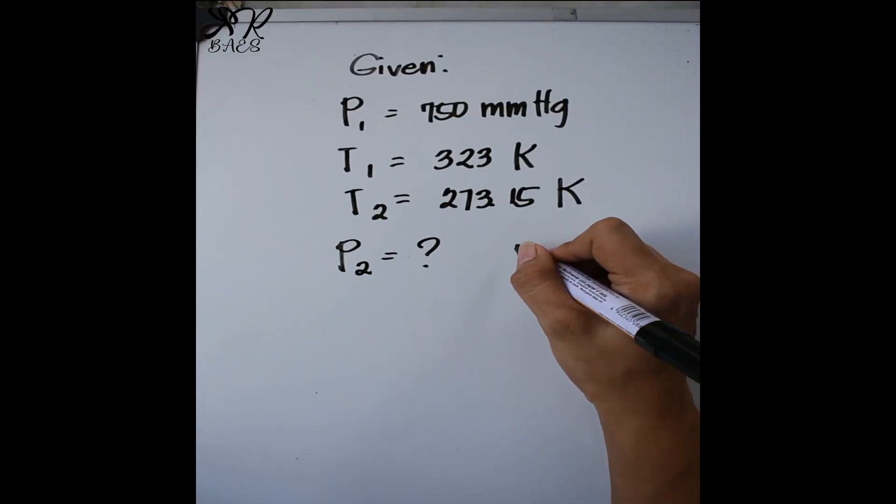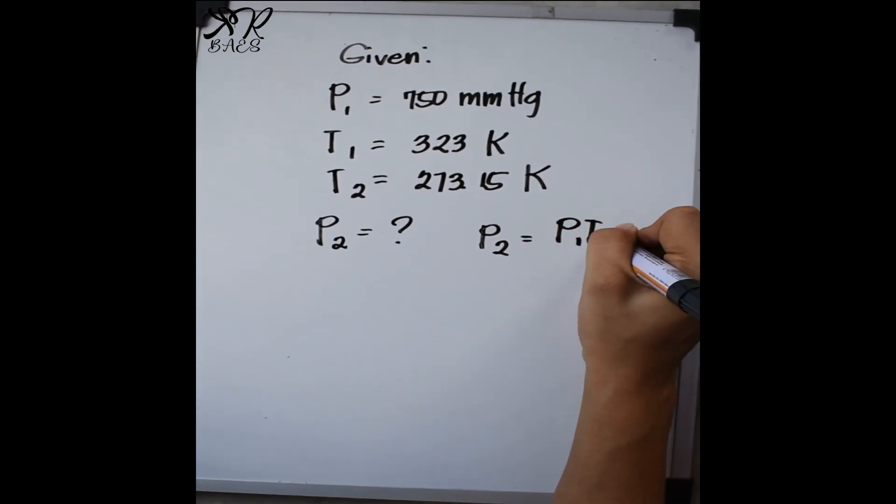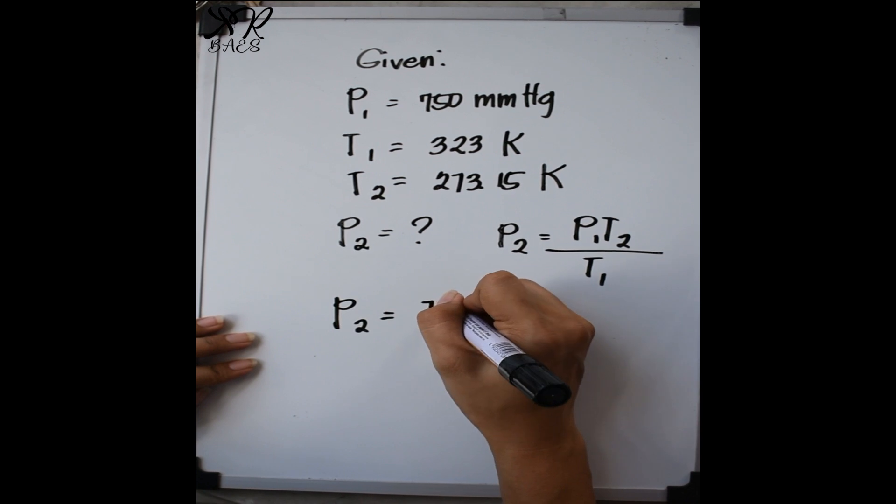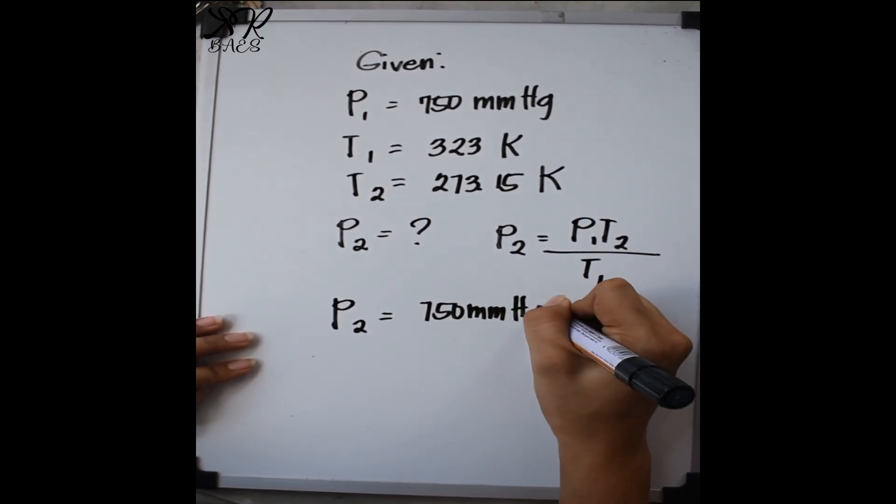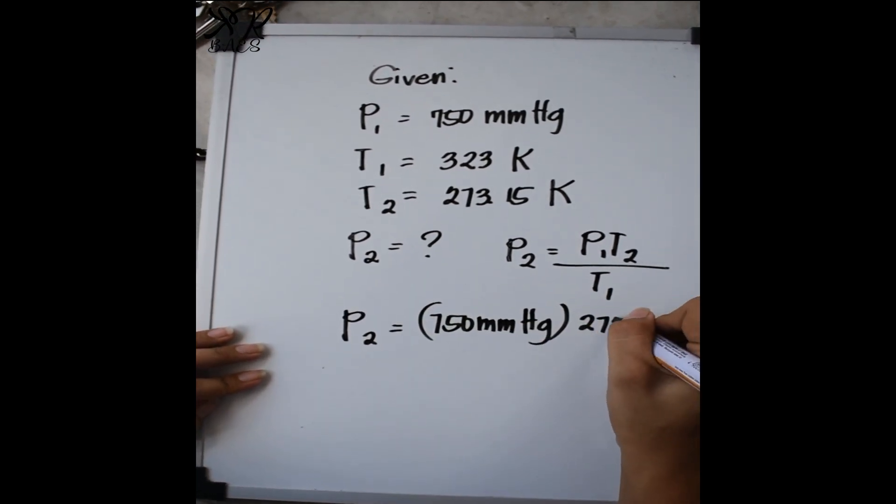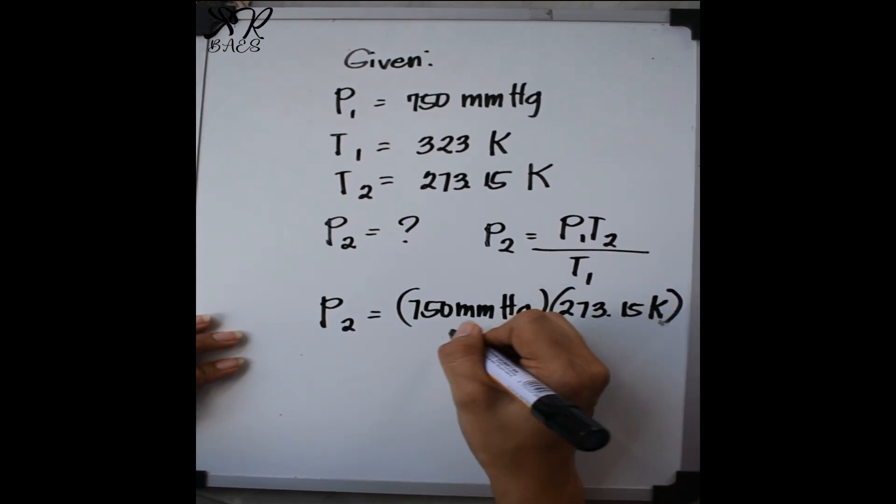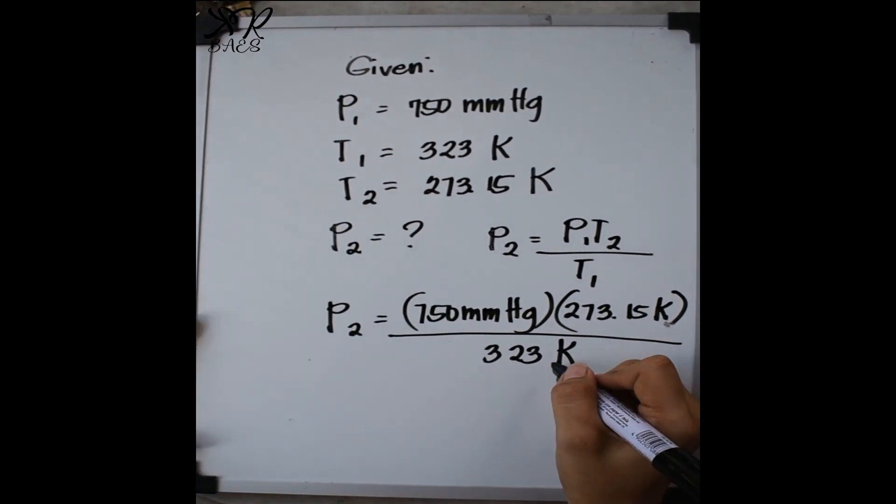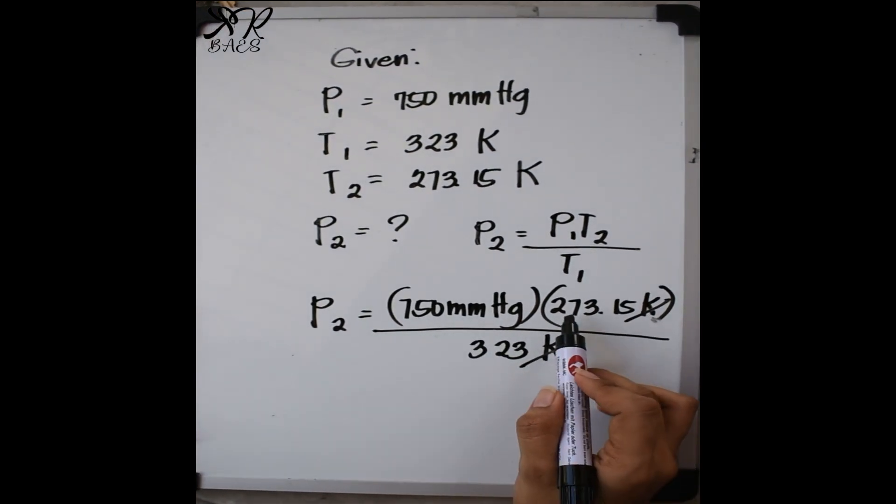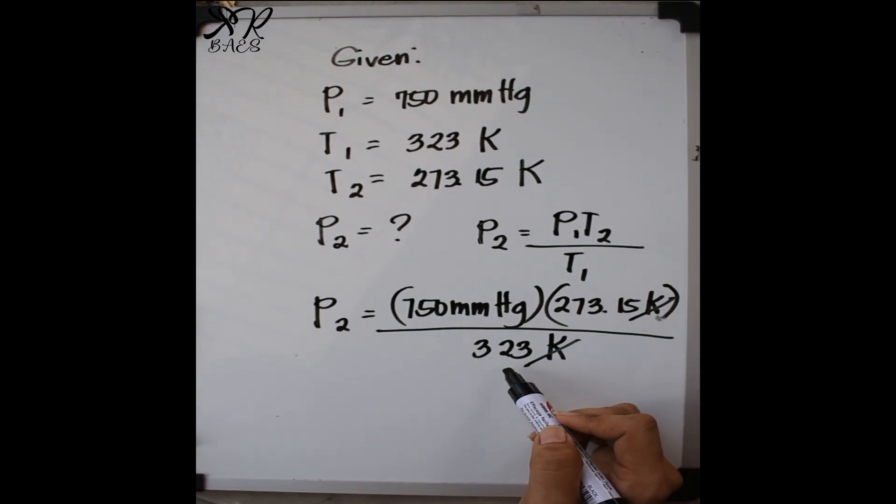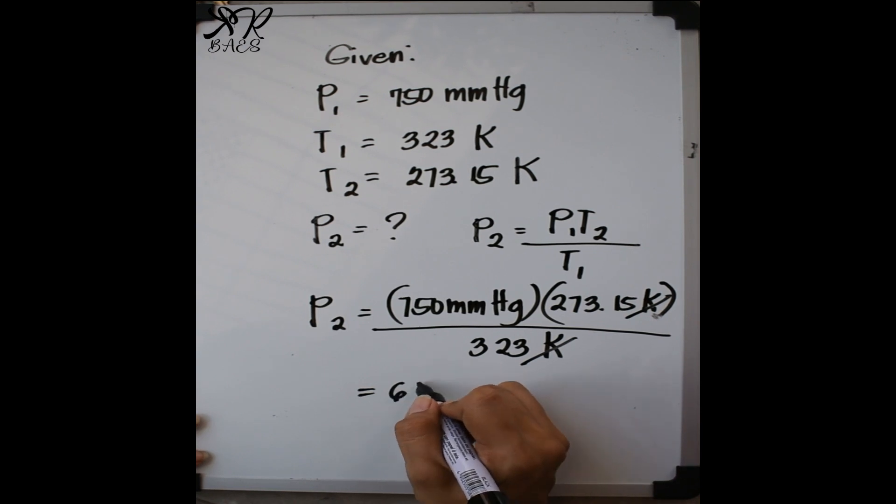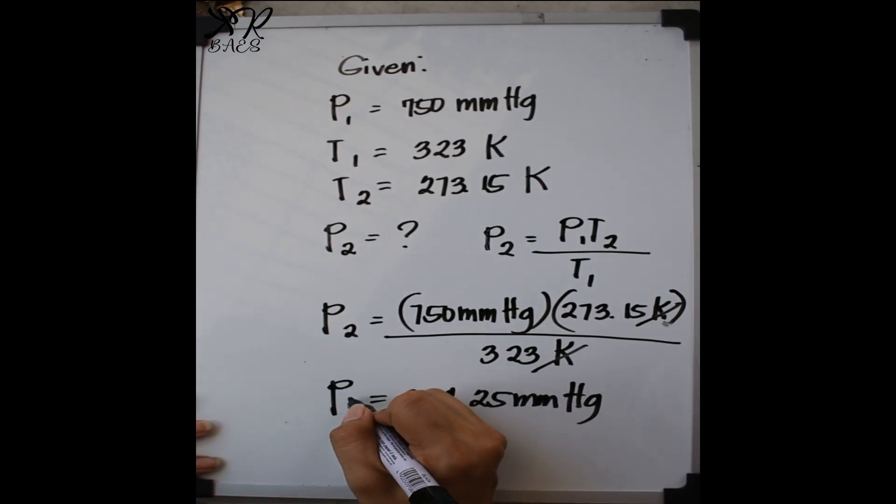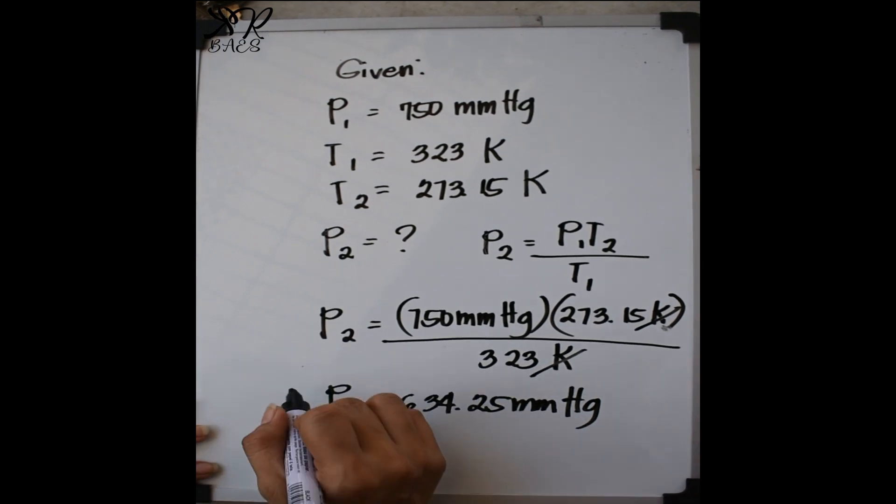So, we are going to use the formula P sub 2 is equal to P sub 1 times T sub 2 all over T sub 1. So, that is equivalent to 750 millimeters of mercury times 273.15 Kelvin all over 323 Kelvin. So, we are going to cancel the unit Kelvin, multiply 750 to 273.15 and divide the answer by 323. The answer is 634.25 millimeters of mercury. So, our final pressure is 634.25 millimeters of mercury.